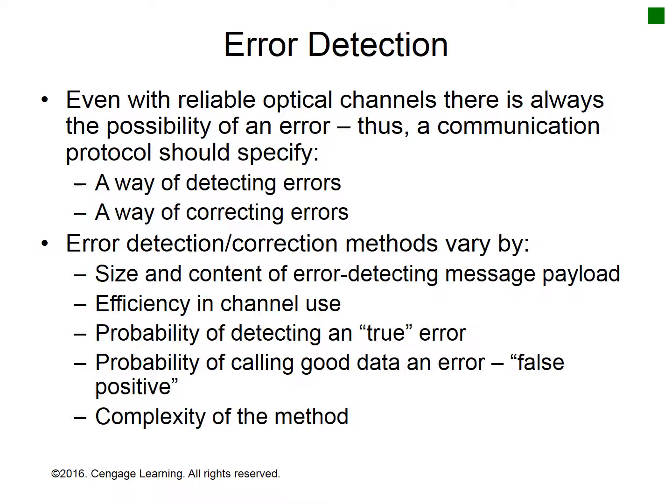As in any complex design, characteristics are in conflict and the chosen method is a compromise among them. For example, an error detection method with high redundancy — such as sending two copies of every message and having the receiver compare them — increases true error detection probability, which is good; increases false positives, which is bad; and also decreases channel efficiency in most cases, which is also bad.